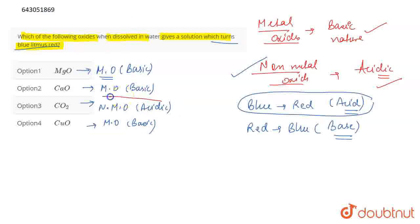So, the correct answer will be option number 3, because it is an acidic oxide and that is why it turns blue litmus to red. So, the correct answer for this question will be option 3. That's all for the question.